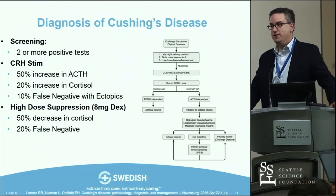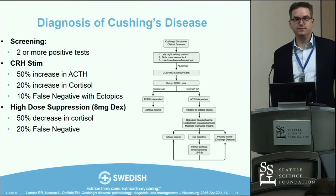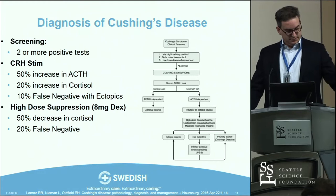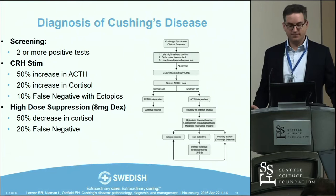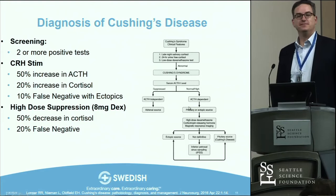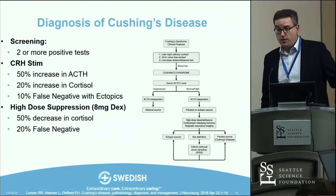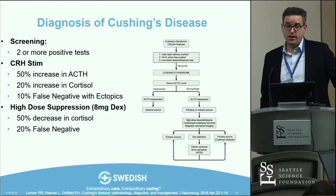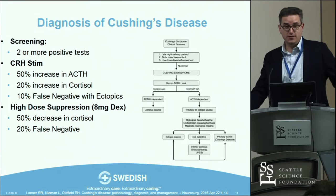Ed Oldfield was the first in the world to describe petrosal sinus sampling at the NIH with several hundred patients, and eventually stopped doing it at UVA because, as agreed, it's good for determining a central source but not reliable for lateralization. The predictive value for central versus peripheral is greater than 95%, while the predictive value for lateralization — Oldfield's original paper said 70% — is probably closer to 50 to 60%.